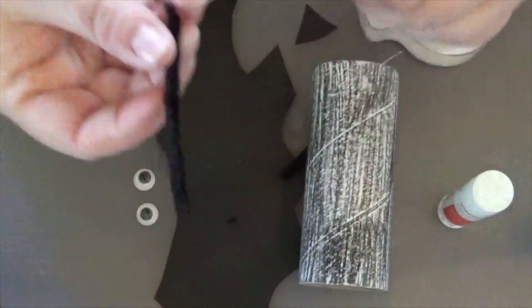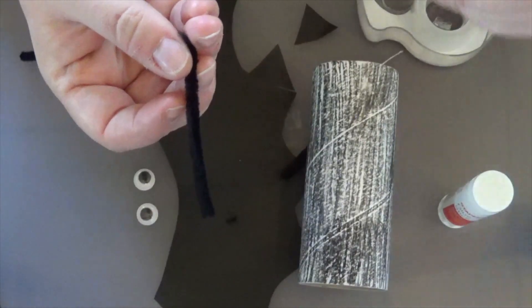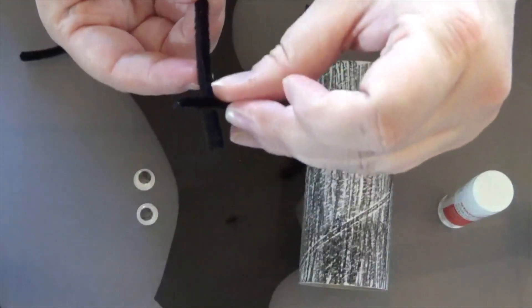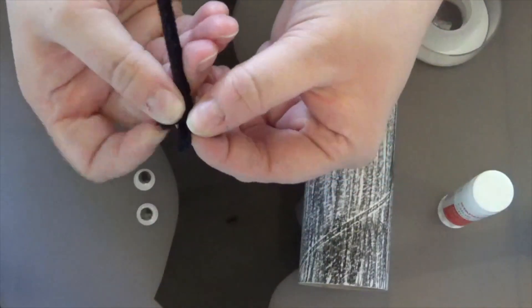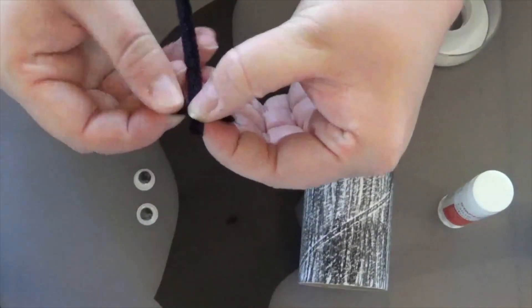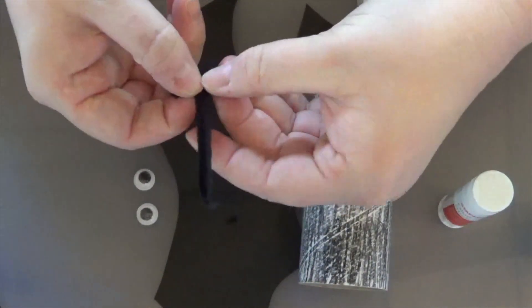So we're going to take our long piece of pipe cleaner or our medium piece, I guess I called it the medium piece. And we're going to take one short piece and we're going to wrap the short piece. We're going to make like almost like a little, I guess I need to do this this way. We're going to make almost like a little lowercase T.